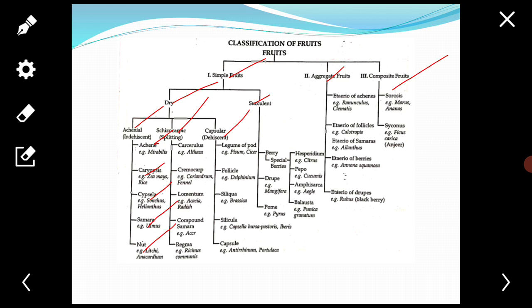Second is caryopsis or grain. These fruits are small, one seeded. Seed coat fused to pericarp over its entire surface. Examples: rice, wheat, barley.